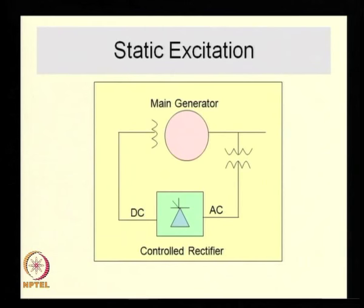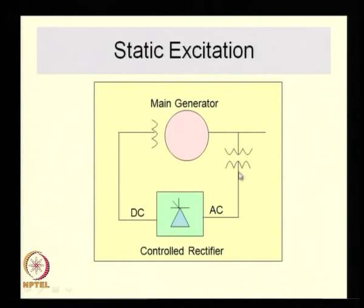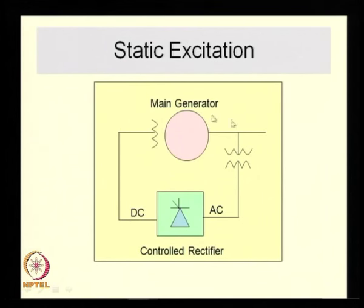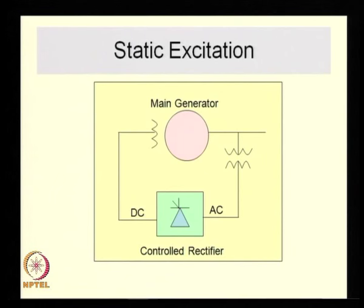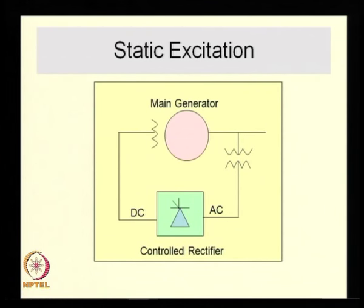The basic static excitation system studied in the previous class consists of a controlled rectifier — a thyristor-based rectifier. The AC input is derived directly from the stator voltages of the main generator, and the rectified output is fed to the field winding. This system is amenable to self-excitation, but in practice you need to initially develop some voltage across the stator windings, done using the station battery in a process known as field flashing.